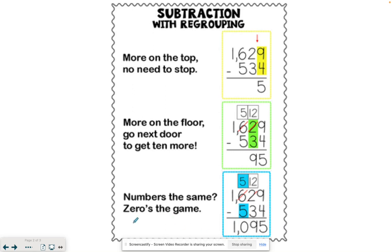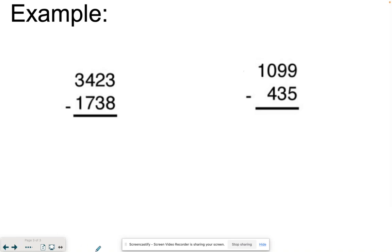Let's take a look at some examples. Let's do the first one together. Three minus eight. If you have three of something, can you give away eight? No, so we need to go next door and borrow ten more. So the two is going to become one less, making it a one.